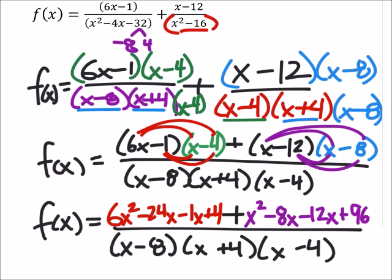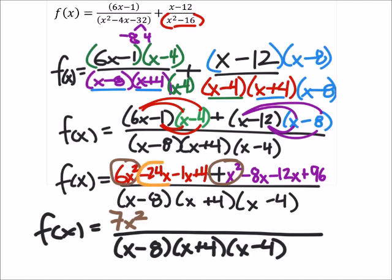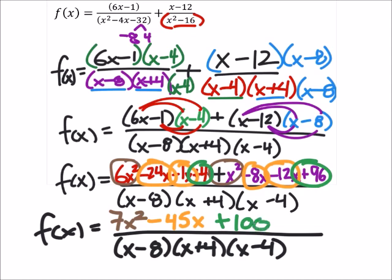From here, what I'm going to do is combine like terms. So let's look at our x squared. We've got 6x squared and then plus this x squared, which gives us 7x squared. Next up, I'll combine my x's. So I got a negative 24x minus 1x, minus 8x minus 12x, which would give us a negative 45x. Then I've got this plus 4 and plus 96, which makes that a plus 100.